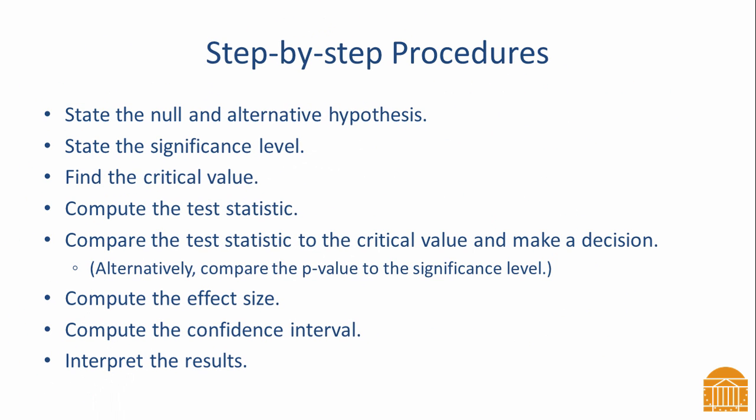Every time you conduct a one sample t-test, follow these steps. State the null and alternative hypothesis. State the significance level. Find the critical value. Compute the test statistic. Compare the test statistic to the critical value and make a decision. Alternatively, if you're using a computer for this analysis, the computer will give you the p-value for the test statistic, and you compare that to your significance level. Next, you'll compute the effect size, the confidence interval, and interpret the results.